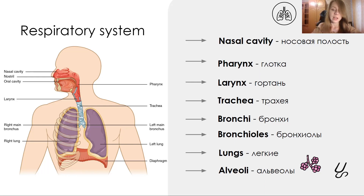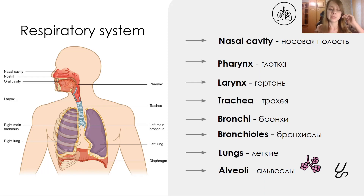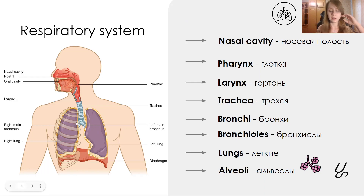After that bronchioles come, and then we should talk about the most important functional unit of the respiratory system, the alveoli. And of course the whole organ is called the lung — left lung and right lung.